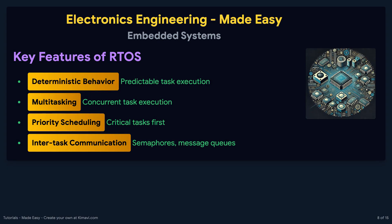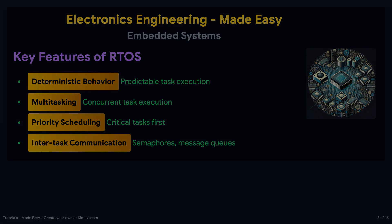The key features of an RTOS include deterministic behavior, which ensures that tasks are executed within a predictable timeframe, multitasking for concurrent task execution, priority scheduling to ensure critical tasks are executed first, and intertask communication mechanisms like semaphores and message queues.